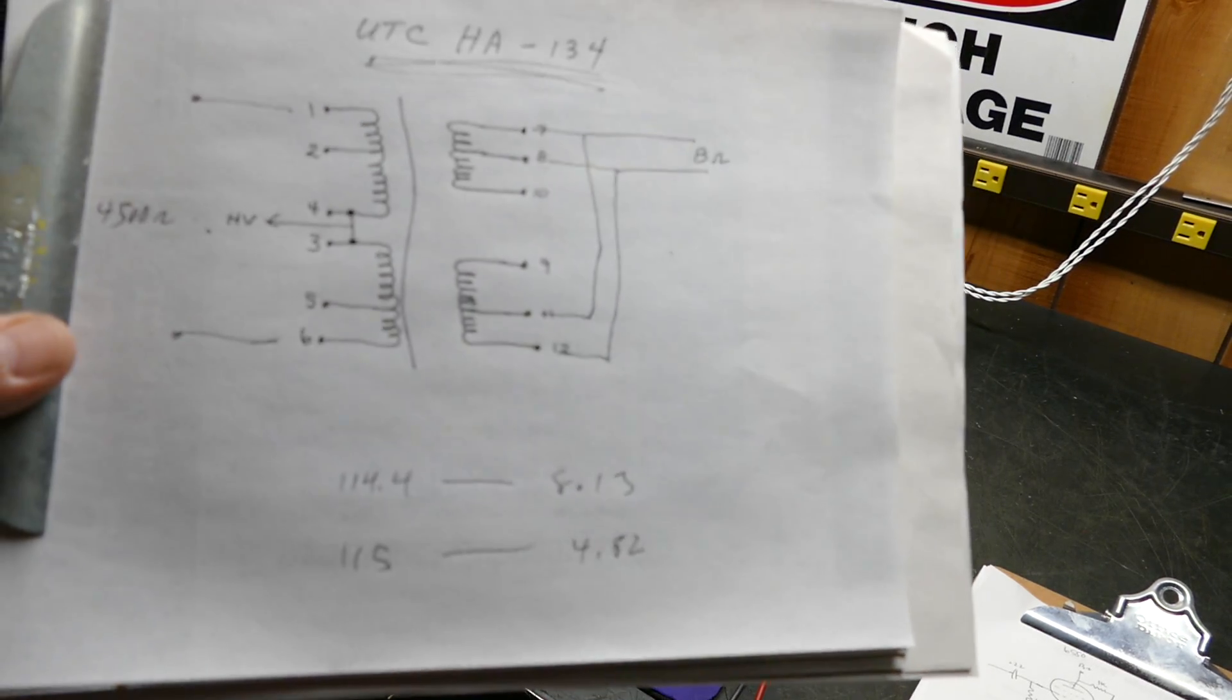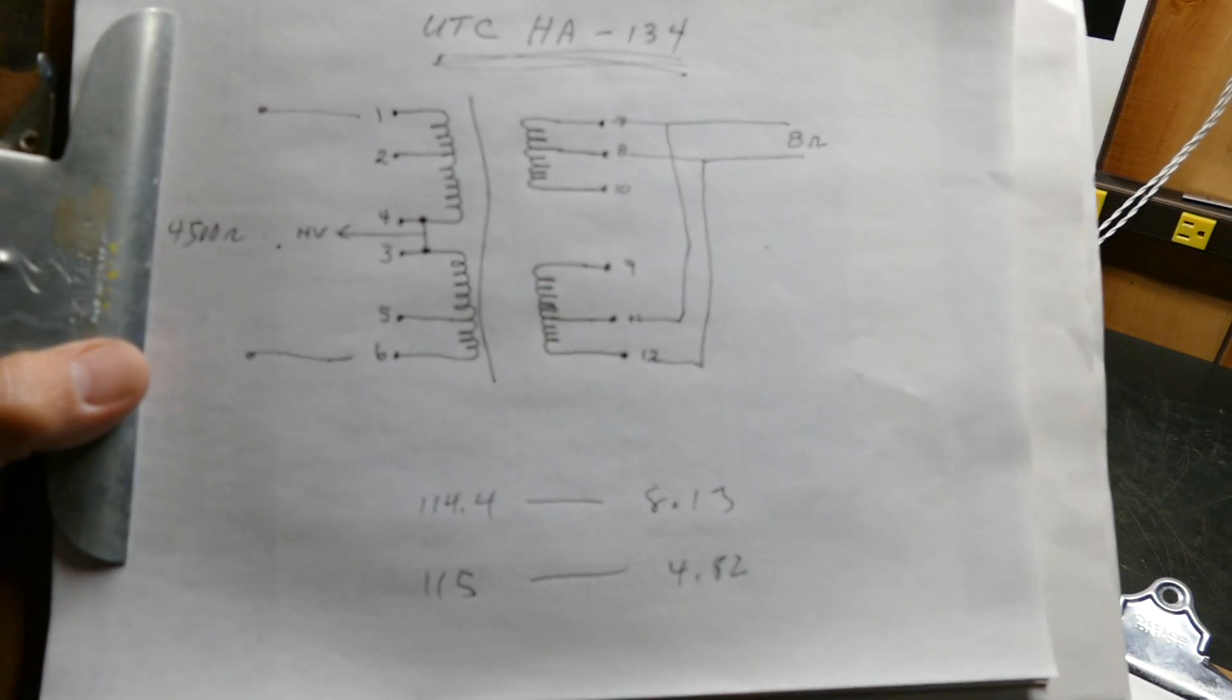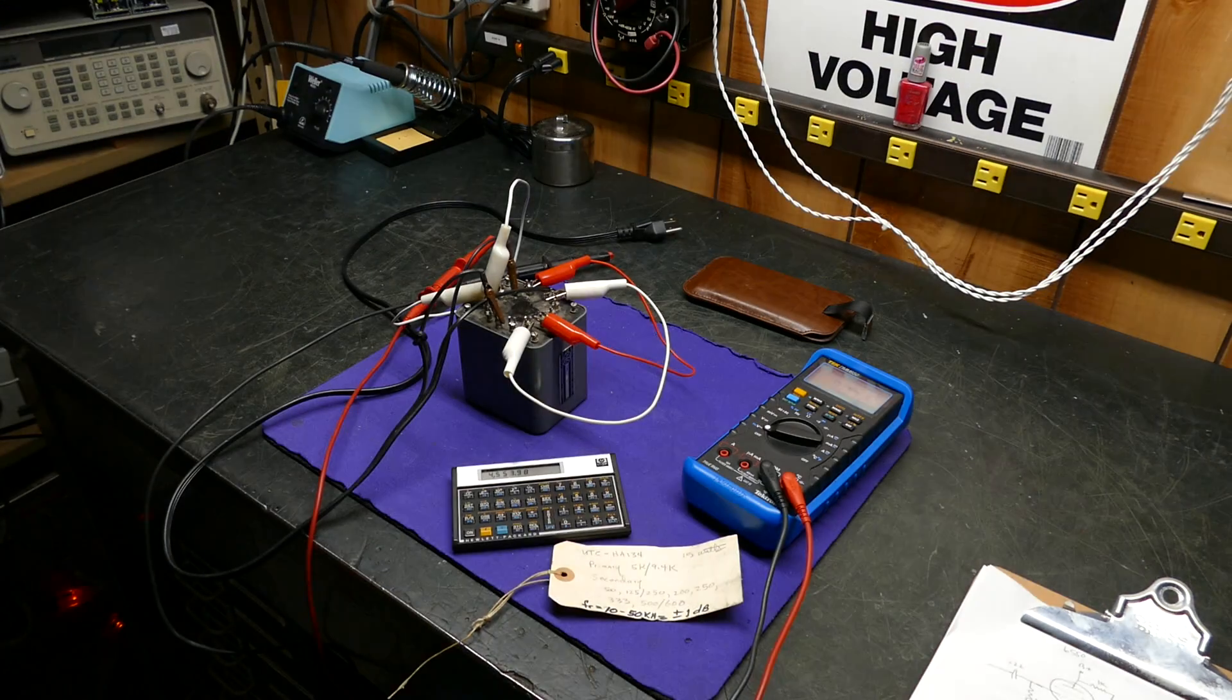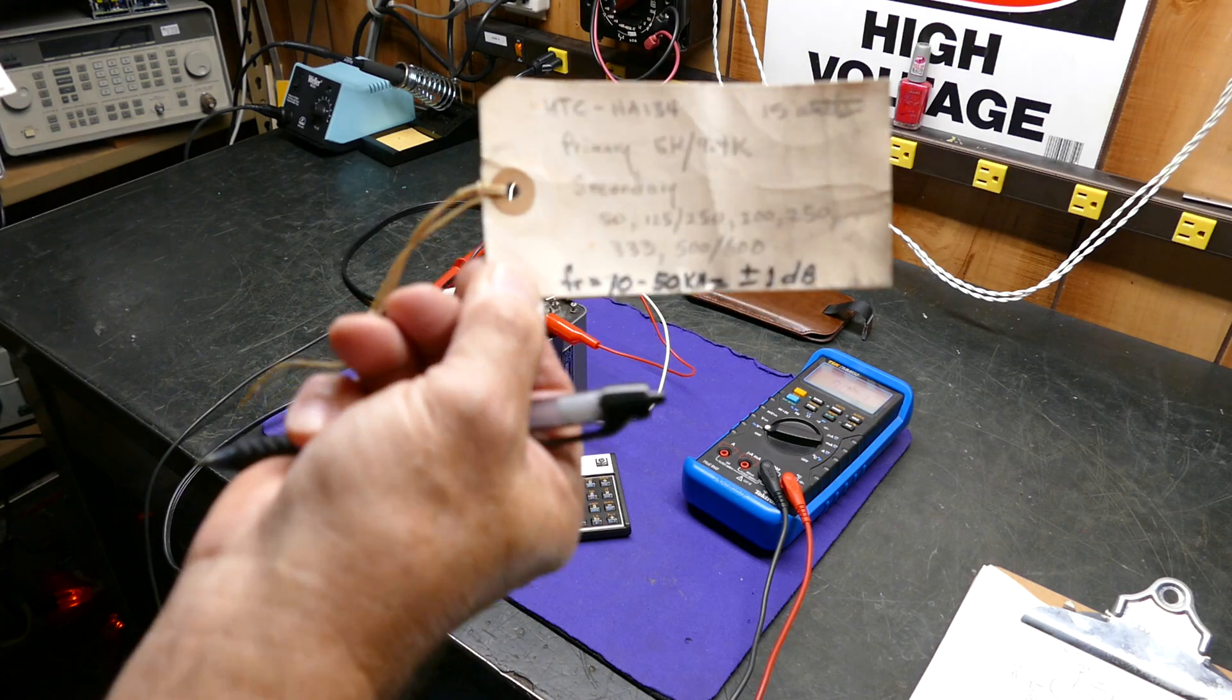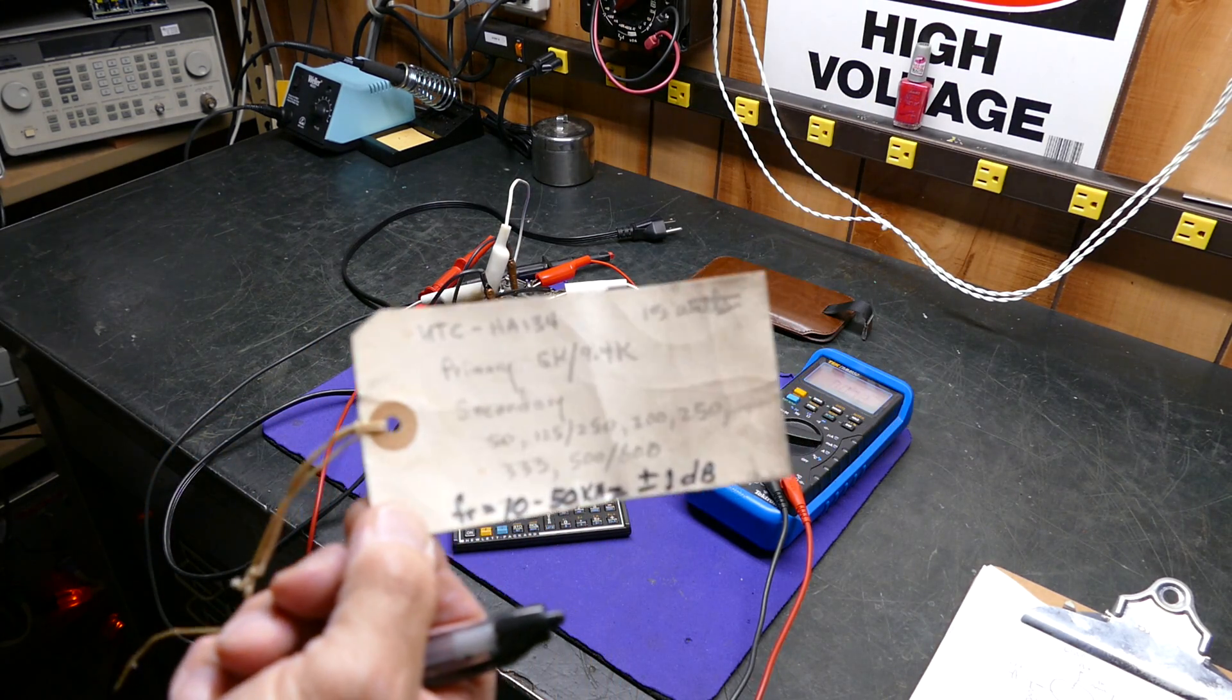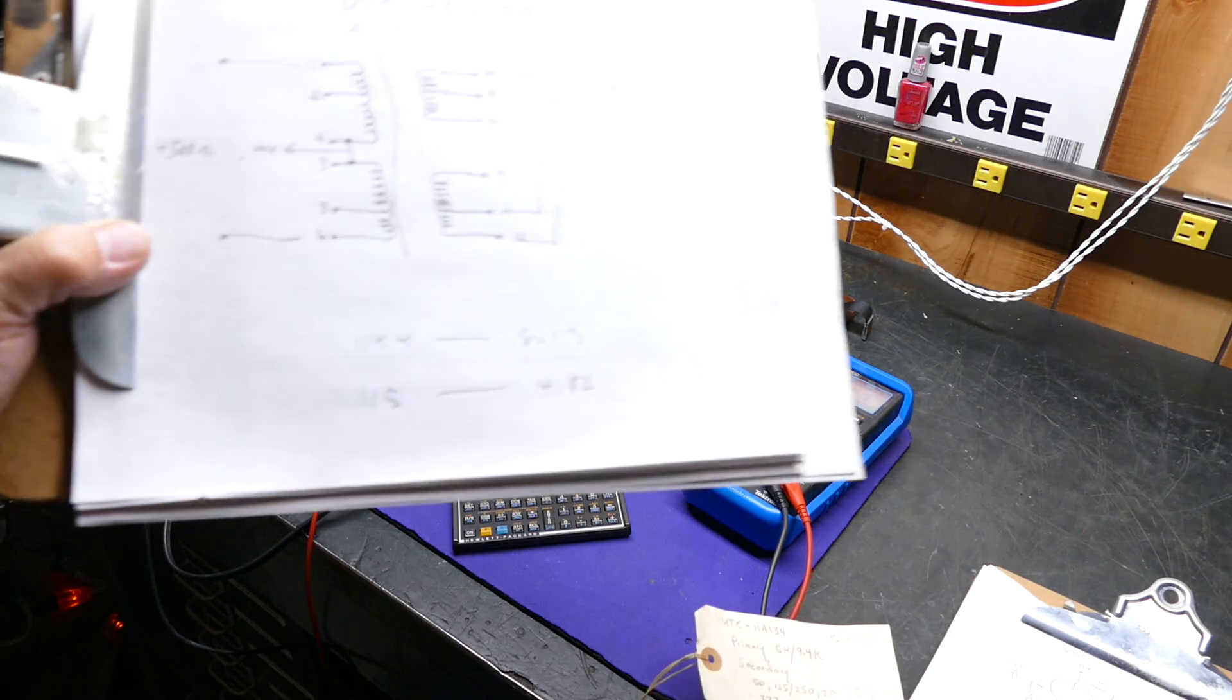I hope this helps somebody. I hope it makes it so you can actually use one of these transformers. It's a mighty little HA-134. Again, it's supposed to be rated 10 hertz to 50 kilohertz plus or minus a dB. They don't say specifically that it's at 15 watts, but I assume it is. So, there you go.